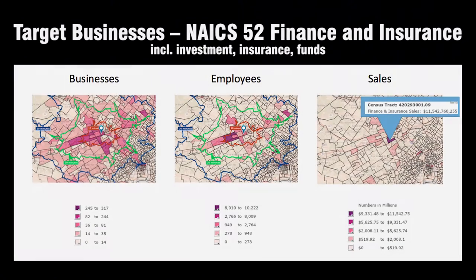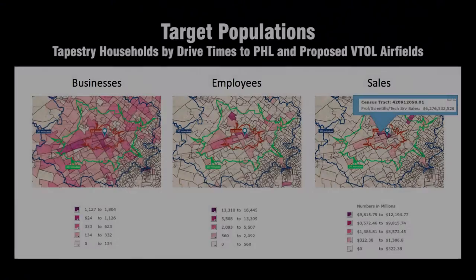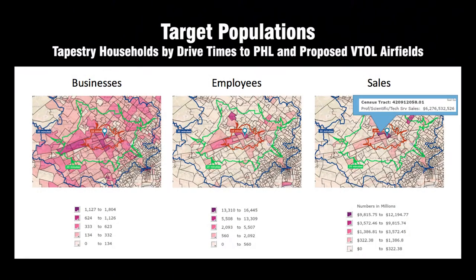In the next industry, finance and insurance, we see the same pattern — number of businesses and employees — again a good segment. Finally, we verify it with a third segment, professional services. This also looks like a good pattern, so we're happy with where that dot is located. We're going to now look in more detail.